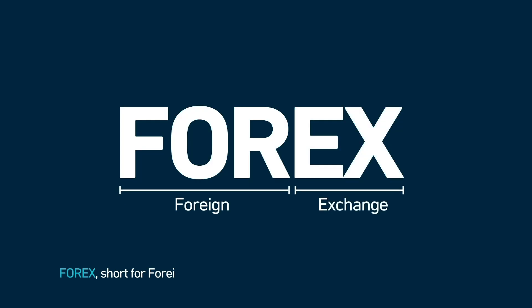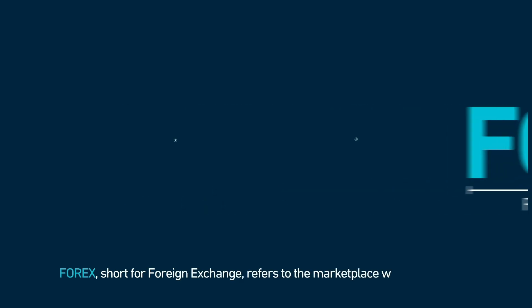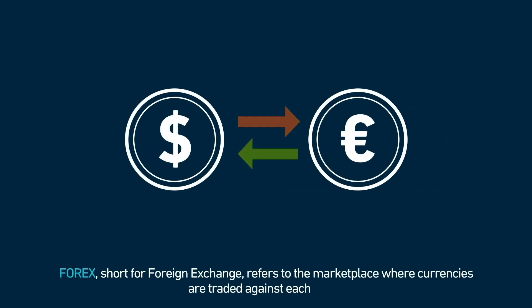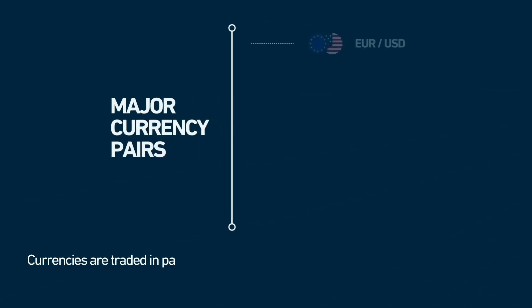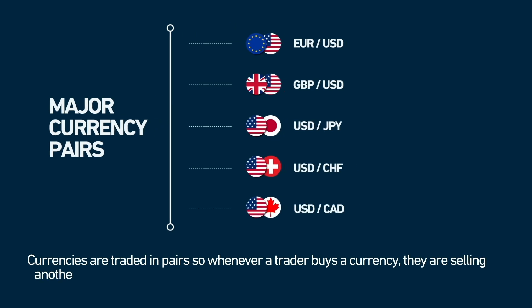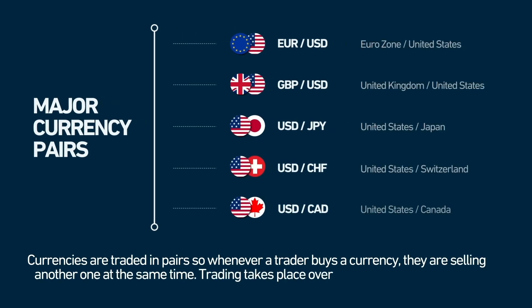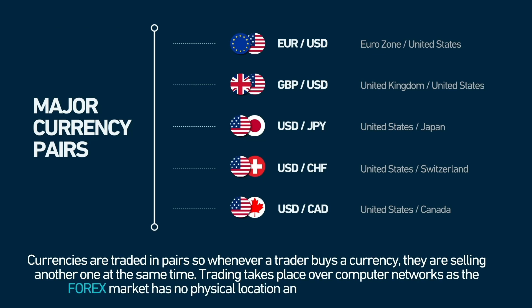Forex, short for foreign exchange, refers to the marketplace where currencies are traded against each other. Currencies are traded in pairs, so whenever a trader buys a currency they're selling another one at the same time. Trading takes place over computer networks, as the forex market has no physical location and is decentralized in nature.